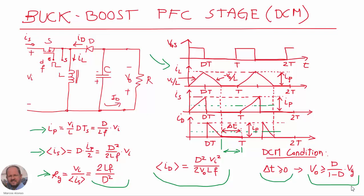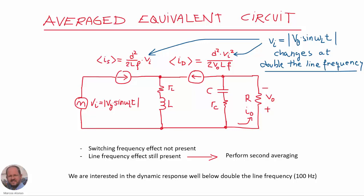With this we can draw the average equivalent circuit of our converter. We have the input voltage, the average current through the switch, the average current through the diode, and the other elements. We can see that now the effect of the switching frequency is not present, but we still have the effect of the line frequency because the input voltage is changing at line frequency and affecting the values of the average currents. So we need to perform a second averaging process to also remove the line frequency effect.